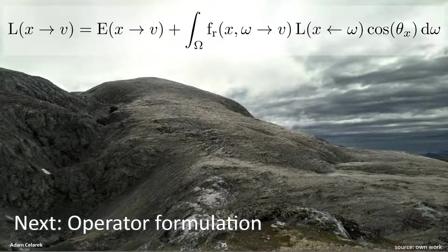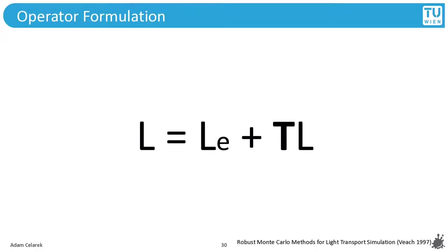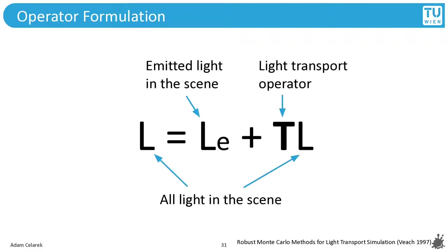Now we will look at the operator formulation. L is a notation representing the light distribution in the scene — think of radiance stored on surfaces. Le is the emitted light, a description of where light is emitted. And T is the transport operator — think of it as the whole simulation of light. This can be written in terms of radiance, but a very similar formulation is also possible for importance, using the adjoint operator instead of the light transport operator.